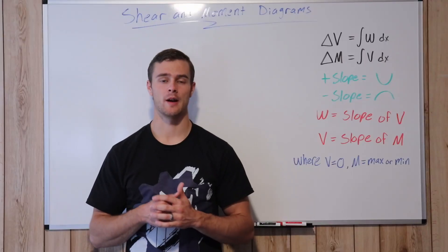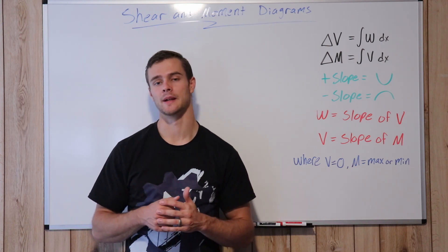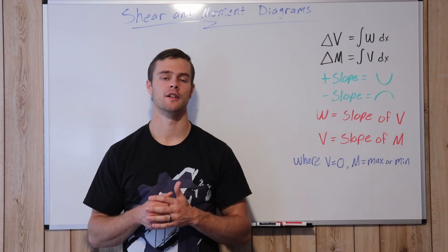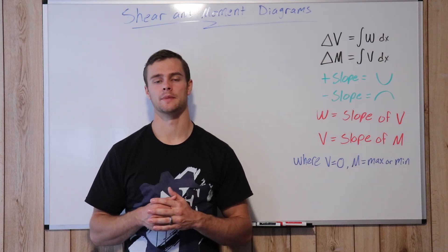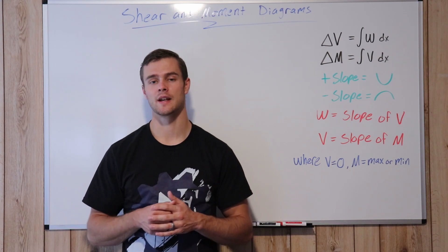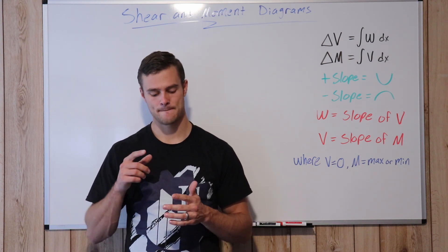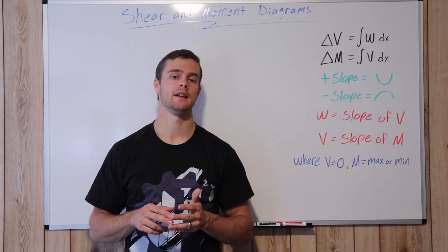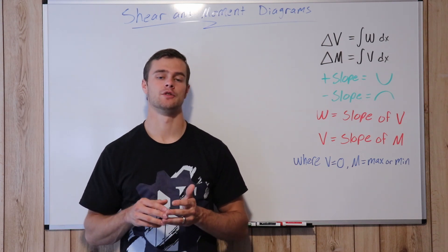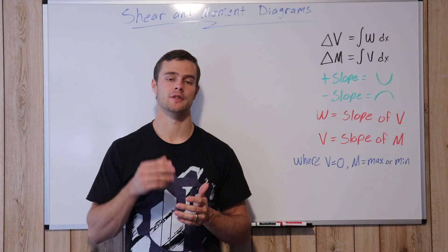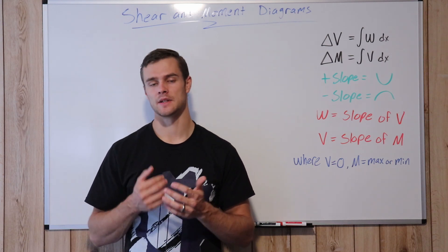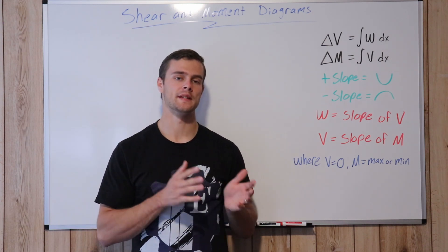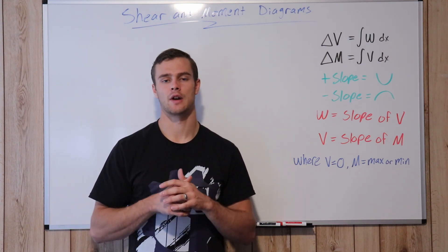Shear moment diagrams are basically graph functions going across the length of the beam that show us the magnitude of the moment or shear at any point along that beam. Those functions are discontinuous because everywhere there is a point moment, a point load, or a distributed load beginning or ending, those functions will have a sudden drop or sudden increase. So we have to look at those functions one piece at a time and graph them accordingly.